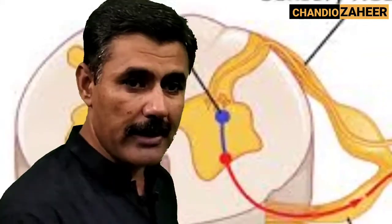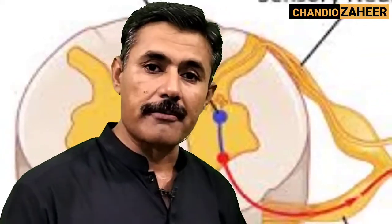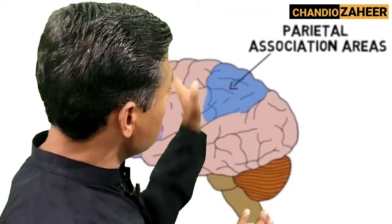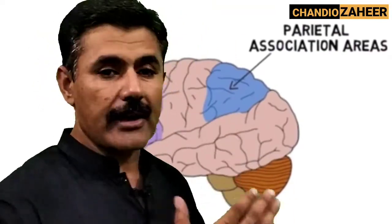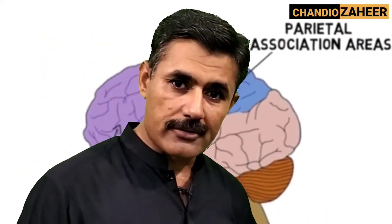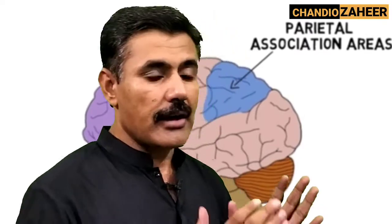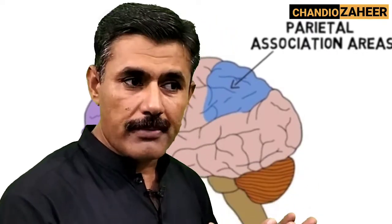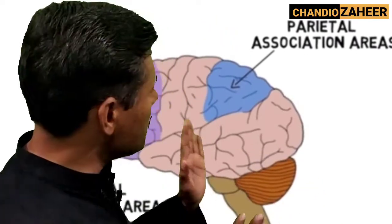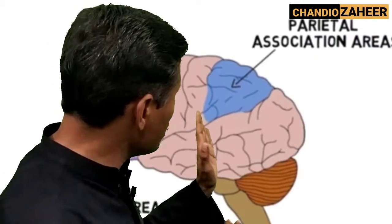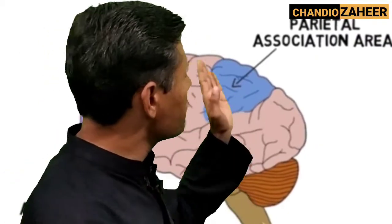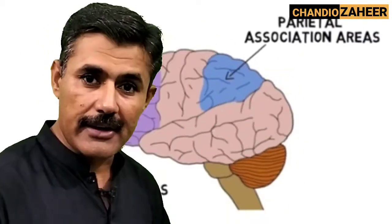Inter-neurons are mostly present in the brain and spinal cord. When they are present in the brain, they can be present in different lobes of the cerebral cortex. Each lobe is divided into three regions — each lobe consists of a sensory region, an association area, and a motor area.